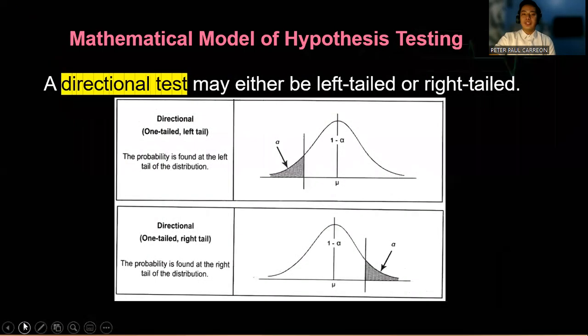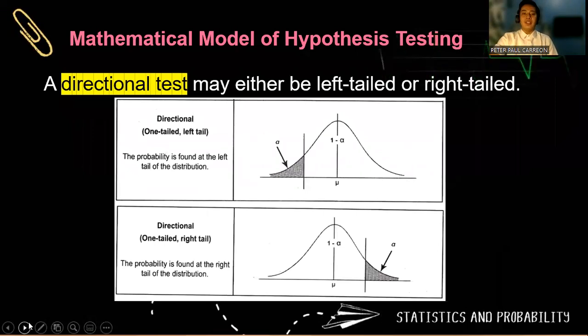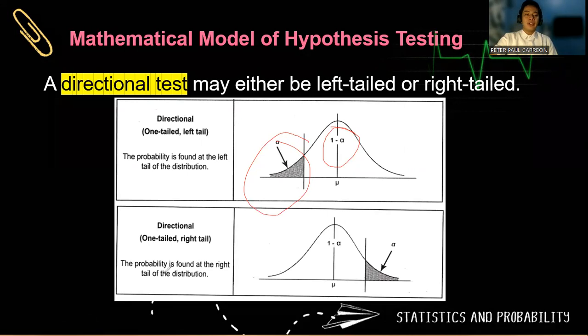Now, for a directional test, it is also sometimes called a one-tailed test. So there are two types of directional tests, the left-tailed and the right-tailed test. Notice that if the rejection region or alpha is found on the left of the distribution, then that is a one-tailed left test, and our non-rejection region is located on the right. However, for a directional test, the probability is found on the right side or the right tail of the distribution. So observe alpha. This is where we reject the null hypothesis. And this one minus alpha gives us an idea where we fail to reject the null hypothesis.